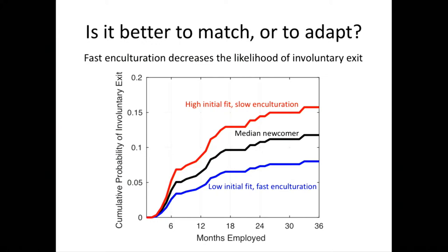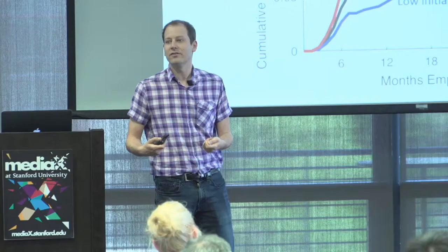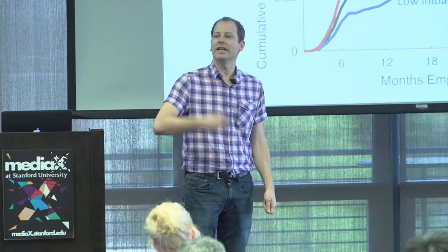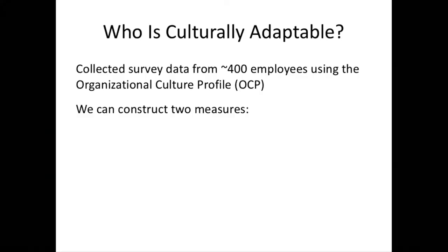Here we see the cumulative probability of involuntarily leaving the organization as a function of months employed, differentiating between people in blue who start with very low initial fit but enculturate very fast, versus those in red who start with high initial fit but are very slow to enculturate. People in red are significantly more likely to be fired. So it's not so much about whether you were matched correctly at the point of hiring — it is whether you have the capacity to learn the cultural code and adapt your behaviors to it.